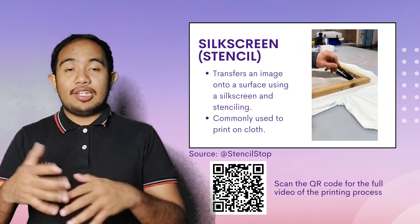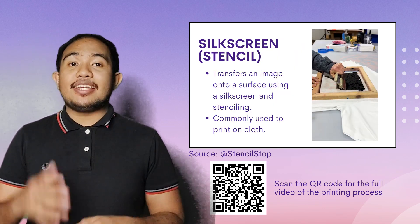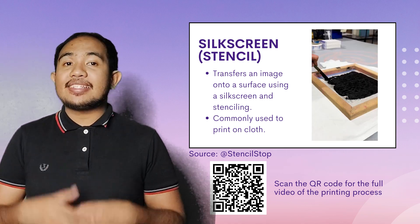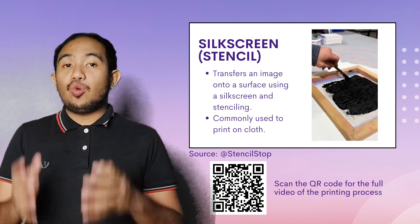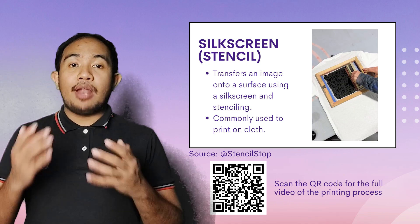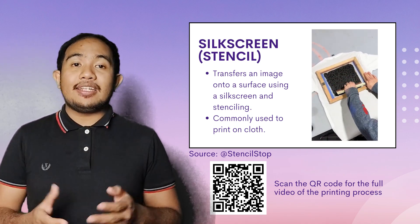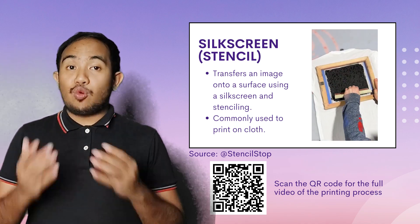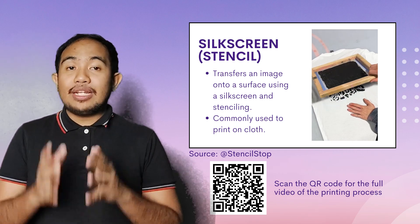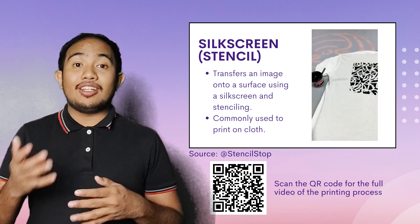Last is silk screen printing, also known as serigraphy. It transfers an image using stenciling through a silk screen. The non-image area is blocked off and ink is forced through the screen using a squeegee. This method is commonly used for printing on cloth, such as cotton t-shirts.